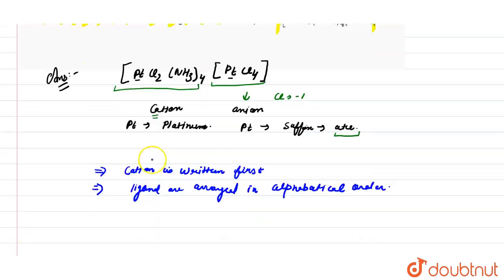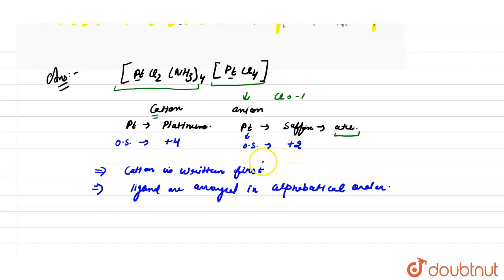The oxidation state of the central metal atom platinum in the first complex is +4, and the oxidation state of platinum in the second complex is +2. These are written in parentheses as Roman numerals to indicate the oxidation states in the complex cation and the complex anion.